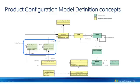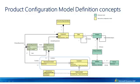A component may have product requirements, which model the generic product structure that a product configuration model resembles. Activity requirements model the activities that need to be carried out in order to produce a configured product. Product requirement and activity requirement may have a condition which is modeled by an expression constraint. This constraint needs to be true in order for either concept to be included in the generation at configuration runtime.